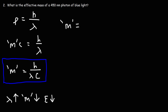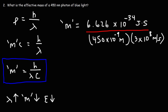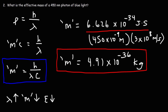So now let's get the answer. We have Planck's constant in the numerator, divided by the wavelength — 450 nanometers, or 450 times 10 to the negative 9 meters — times the speed of light, 3 times 10 to the 8 meters per second. The effective mass works out to approximately 4.91 times 10 to the negative 36 kilograms. It's very, very small — very close to zero. But that is the effective mass of a 450 nanometer photon of blue light.